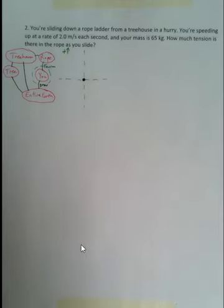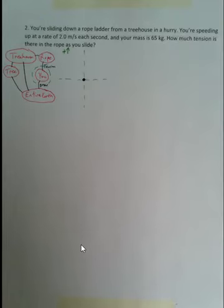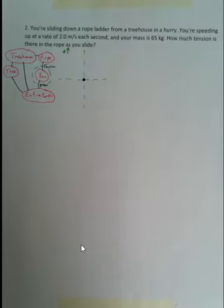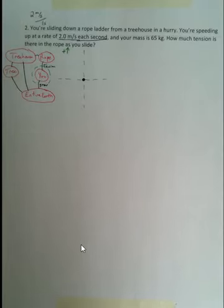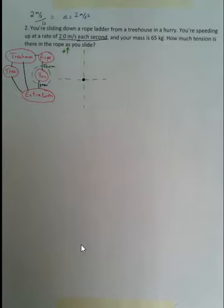Let's try one more example of using Newton's second law and free body diagrams together for problem solving. The situation: you're sliding down a rope ladder from a tree house, and you're hurrying, so you're speeding up as you go down — speeding up at a rate of two meters per second each second. That's not a velocity; that is the acceleration: two meters per second squared.